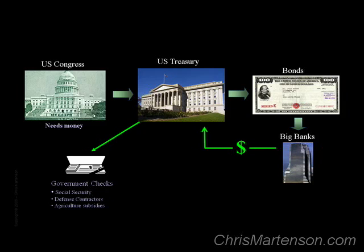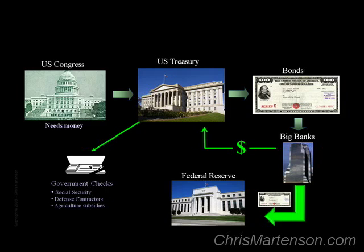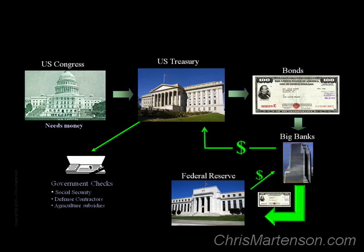Money is created by this next mechanism, where the Federal Reserve buys a Treasury bond from a bank. When the Fed does this, they simply transfer money in the amount of the bond to the other bank and take possession of the bond — a bond is swapped for money. Where did this money come from? It comes out of thin air, as the Fed creates money when it buys this debt.